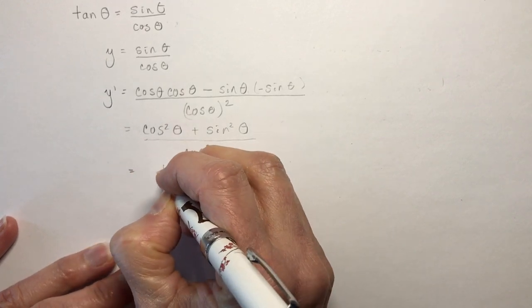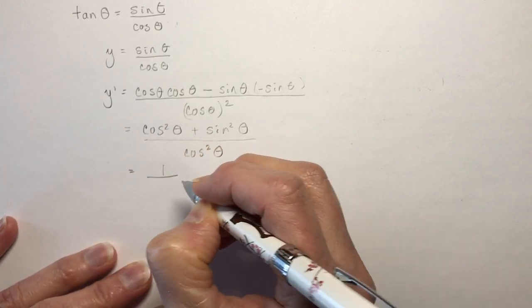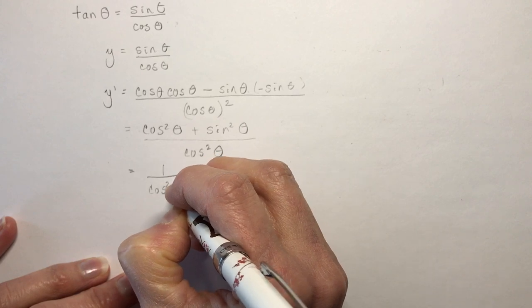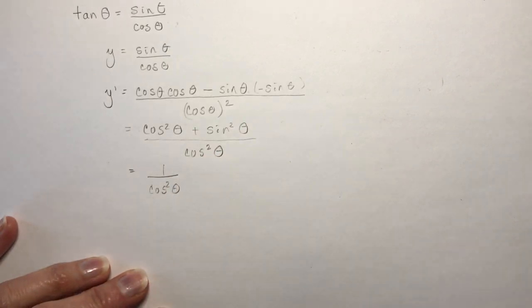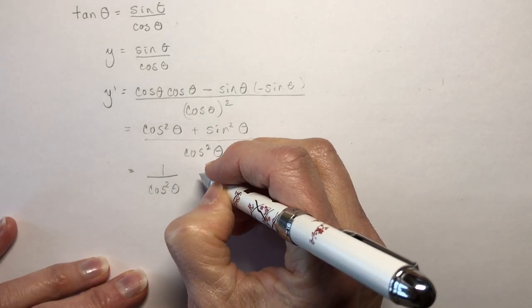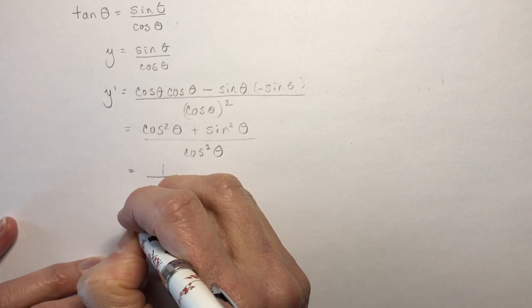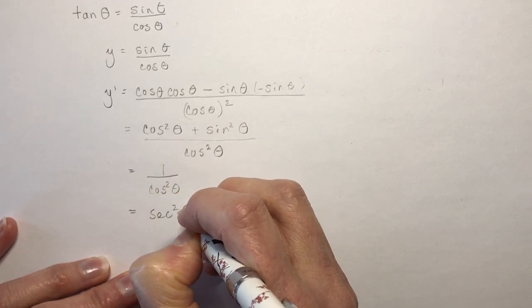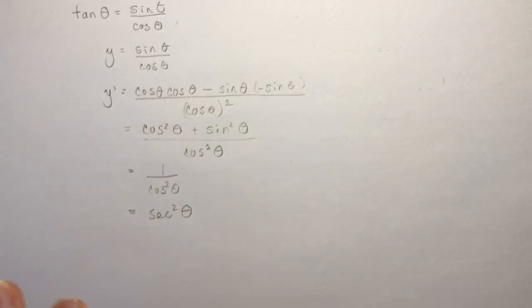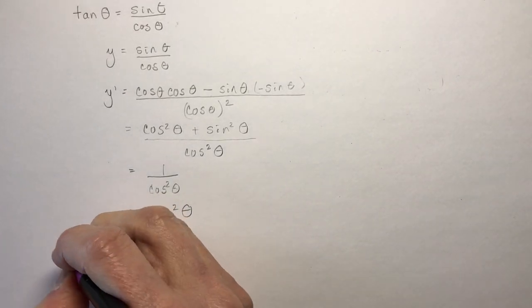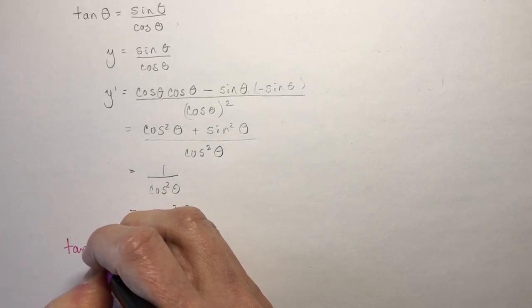So we have 1 over cos² θ, and 1 over cos² θ is secant squared θ. There's your first derivative result.